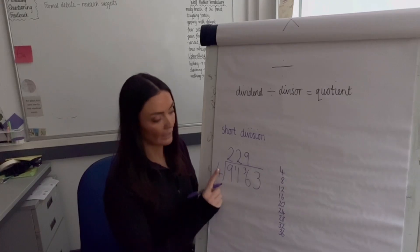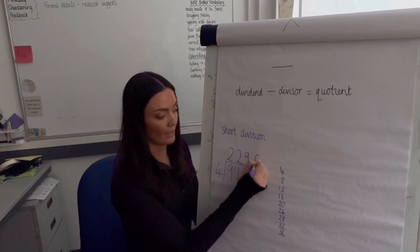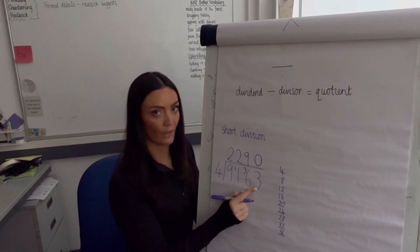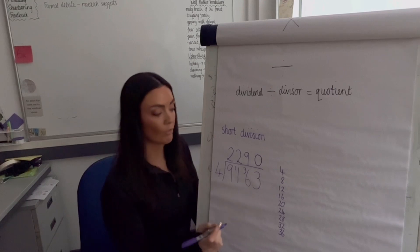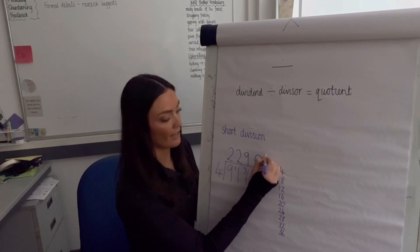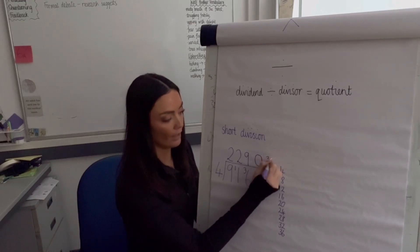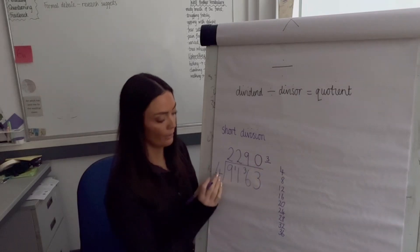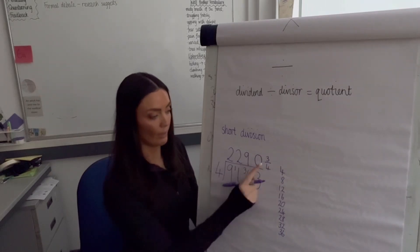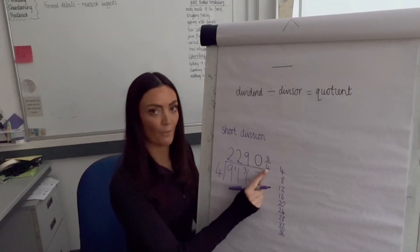How many equal groups of 4 are in 3? Zero — and it's really important to write that zero. Then we have 3 left over. In Year 5 and 6, we write the remainder as a fraction: 3 left out of a whole group of 4, so the remainder is three-quarters. The divisor becomes the denominator.